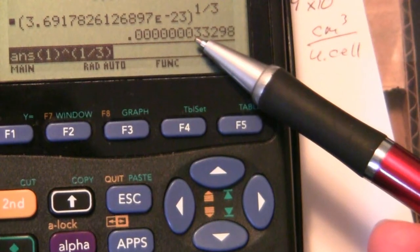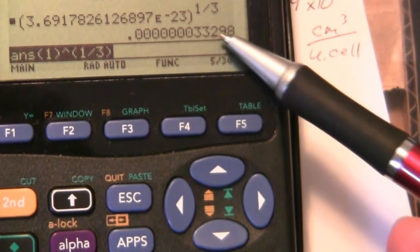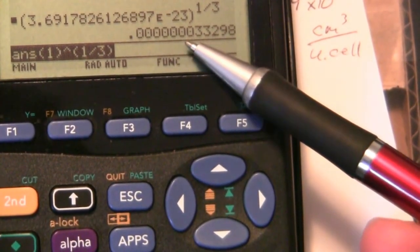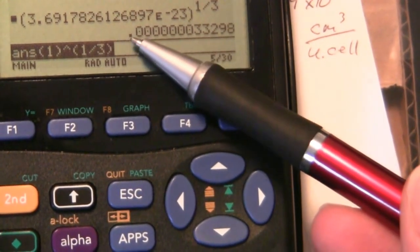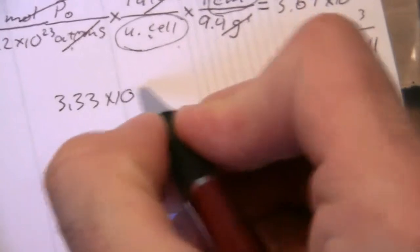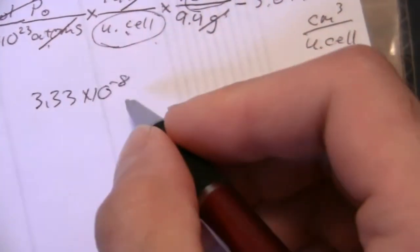and that'll be 3.33, if I round this, times 10 to the negative 1, 2, 3, 4, 5, 6, 7, 8. 3.33 times 10 to the negative 8th. And what are my units now?